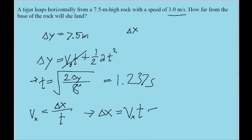So if we put this into our calculator, put in 3.0 meters per second for v sub x, and then put in 1.237 seconds in for t, then we find a horizontal range of 3.7 meters, which means that that is how far the tiger landed from the rock. And that is our solution to this problem.